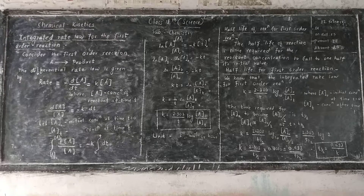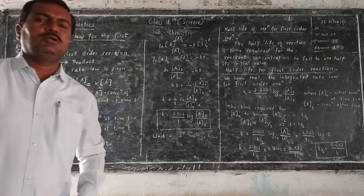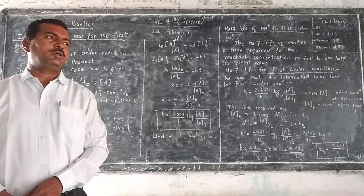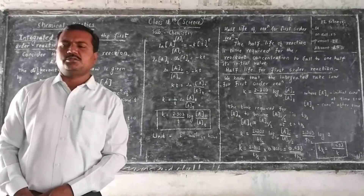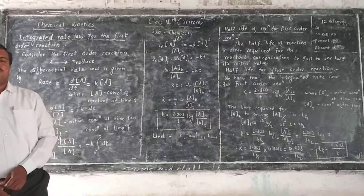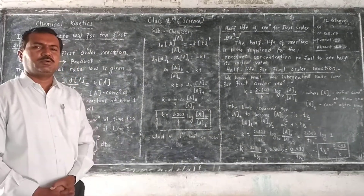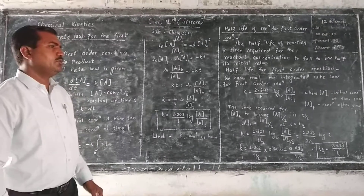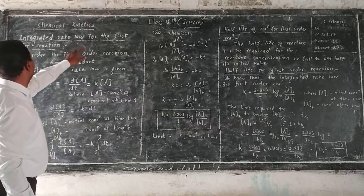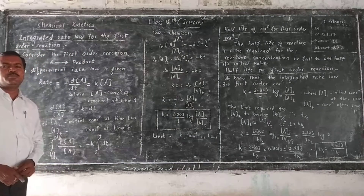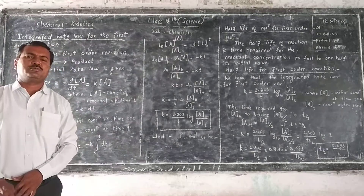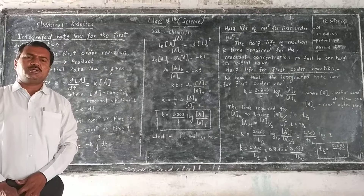We know that order of reaction is the number of reactant molecules taking part in a chemical reaction. For a first order reaction, the reaction in which the rate of reaction depends upon the concentration of only one reactant is called a first order reaction. Today we are going to study the integrated rate law for first order reaction, where the rate of reaction is directly proportional to the concentration of only one reactant.